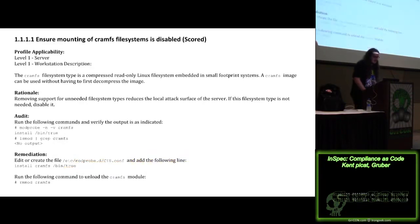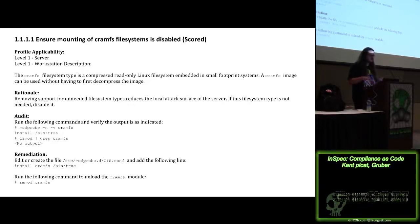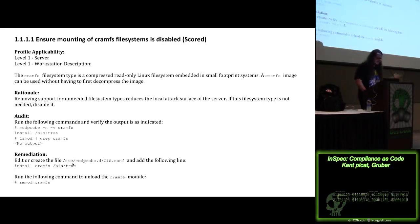Let's follow the very first control: 'ensure the mounting of the cramfs file system is disabled.' Looking at the PDF, it has the title, applicability — should be on servers and workstations — a description, rationale, and the audit: run modprobe and it should have that as output. If you do this other check, it should have no output. And edit this file if it's broken. Not too bad, but I want to automate this task.